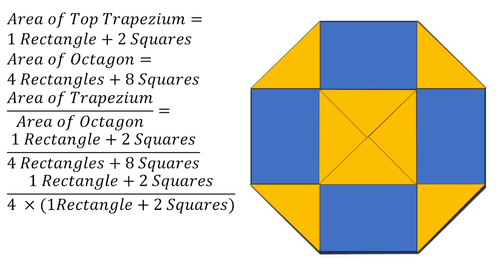Therefore the area of the octagon is four times as much as the trapezium. Or in other words, the area of the trapezium is one fourth the area of the octagon.